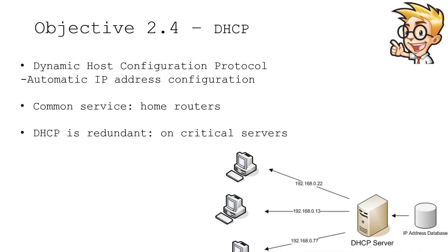Another common service that you'll find in a data center is a DHCP server. This stands for Dynamic Host Configuration Protocol and it's a service that automatically assigns and configures IP address settings on your local device. This is a service we've become very accustomed to having — we can plug in or connect to anyone's network and we're automatically provided IP addresses, DNS settings, and everything else that we need. If you have a wireless router or a cable modem, that device is probably also running a DHCP server inside of it. In an enterprise environment there will probably be multiple DHCP servers to provide redundancy so if one is unavailable another will be up and serving.